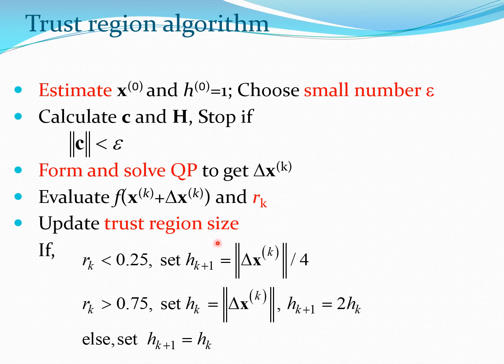And then you update the trust region size depending on these particular situations. If rk is less than 0.25 you shrink the trust region. If rk is greater than 0.75 you expand the trust region. So you can see that here. Here we are dividing by 4. Here we are multiplying by 2. You can play around with different scenarios also but this is a good scenario. And if none of these are true then of course we can just set hk plus 1 equals hk.